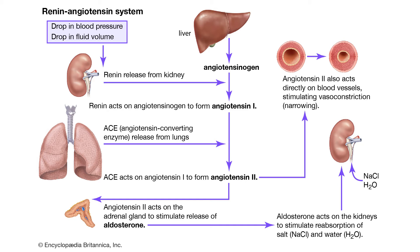Looking at this diagram, you can see how ACEs and ARBs work. An ACE inhibitor inhibits the ACE enzyme, stopping the conversion of angiotensin one to angiotensin two. If you stop that conversion, angiotensin two cannot perform those three mechanisms to raise blood pressure, so blood pressure remains more stable — making it useful for hypertension. ARBs — angiotensin receptor blockers — block receptors in the adrenal gland and arterioles. If you block these receptors, angiotensin two has nowhere to bind and therefore cannot raise blood pressure, so ARBs can also be used for high blood pressure.